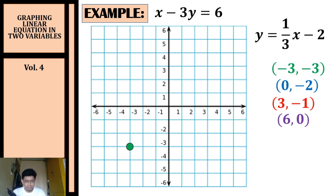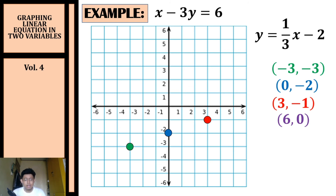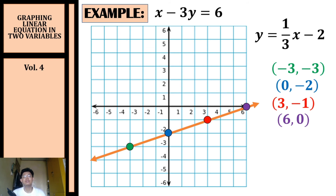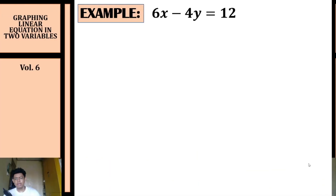We plot (−3, −3), then (0, −2) along the y-axis, (3, −1) in the fourth quadrant, and (6, 0) along the x-axis. Connecting the dots gives us the graph of x minus three y equals six.